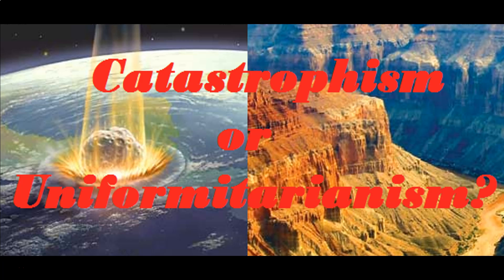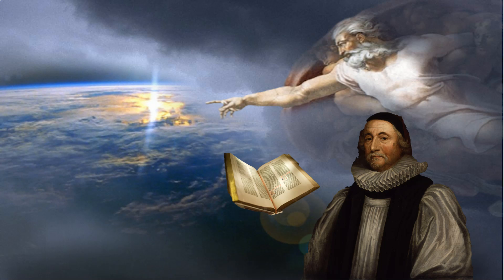The Earth is 4.54 billion years old, but we have to look at the conflicting theories. One of the primary conflicting theories comes from biblical aspects. What you're seeing here is Archbishop James Usher, who derived from biblical accounts that the Earth is actually only about 7,000 years old. He looked through these biblical accounts and backdated it to October 22, 4004 B.C. as the creation of Earth.